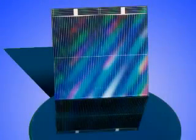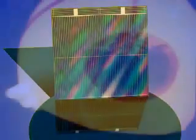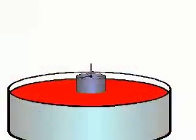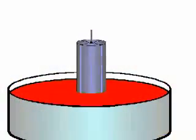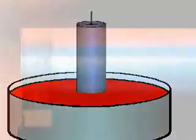Solar cells convert sunlight directly into electricity. We start with sand, which is processed into highly purified silicon.